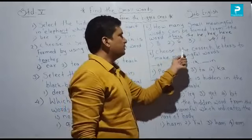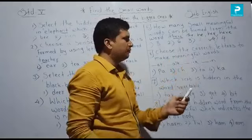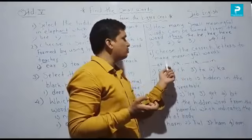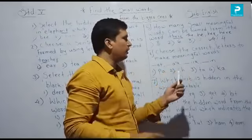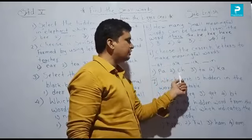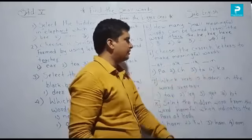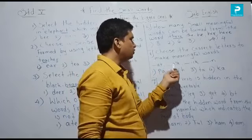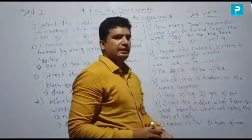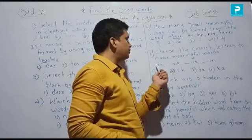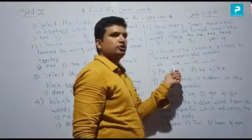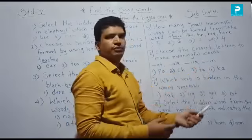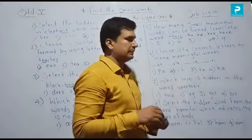Sixth: Choose the correct letters to make meaningful words. From the options — P-A, C-H, T-A, or K — which letters make meaningful words? 'PA' gives words like 'path' — not quite right. But 'C-H' works: C-H-A-T (chat), C-H-A-L-K (chalk), C-H-I-C-K (chick), C-H-I-N-G. So these are four words made using the letters C-H. The answer is C-H.